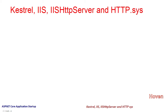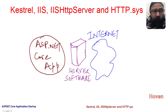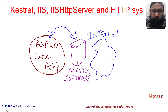Kestrel, IIS, HTTP.SYS, HTTP server and the HTTP.SYS. An ASP.NET Core application cannot directly accept requests from the internet. For this, it needs a server that can face the internet and help it communicate with the calling client on the other side. This means that some sort of coupling is required with the server software. This tutorial discusses various possibilities of coupling to a server software and then serving the requests to the remote client.